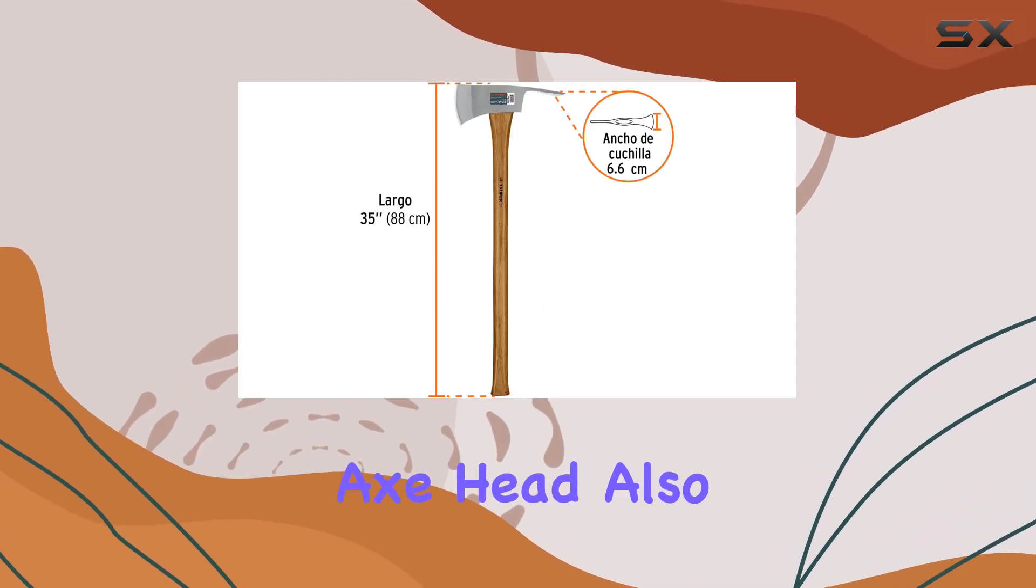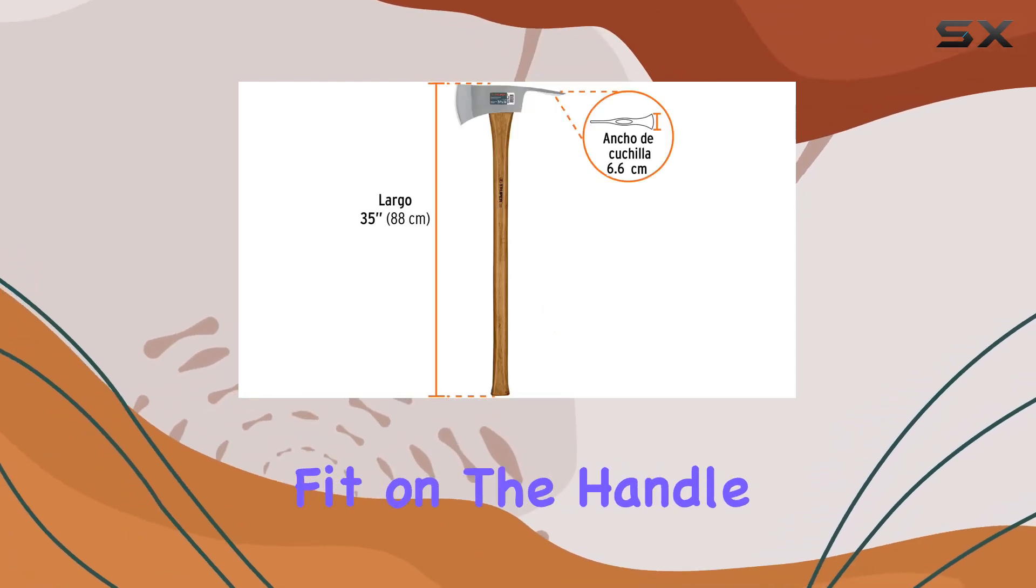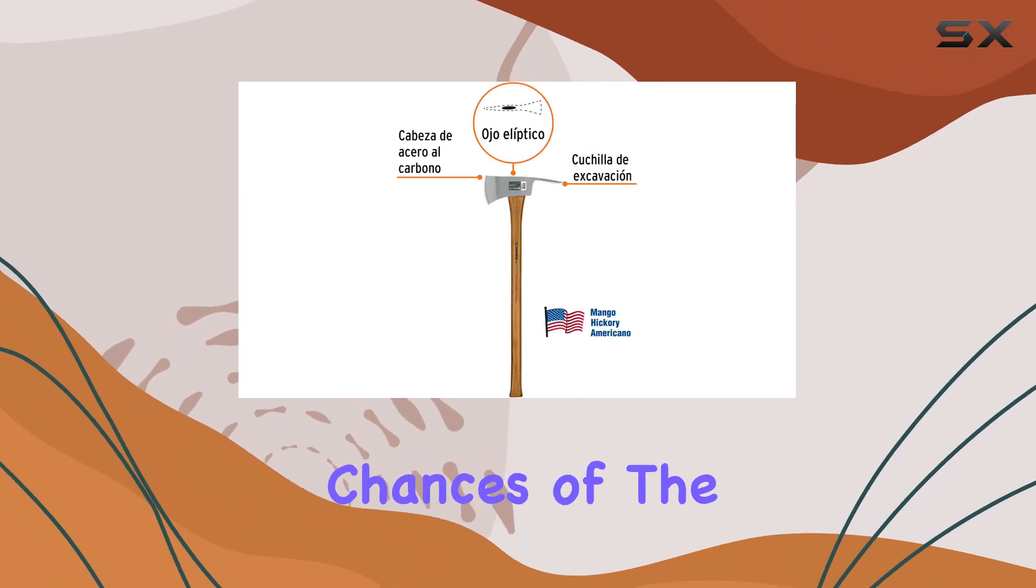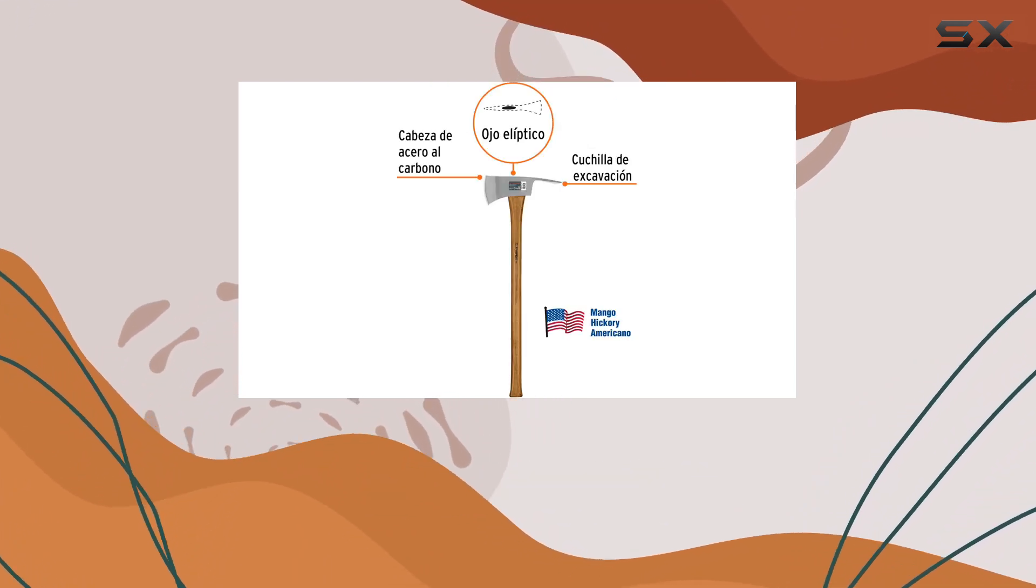The elliptical eye design of the axe head ensures a secure fit on the handle, reducing the chances of the head slipping or loosening over time.